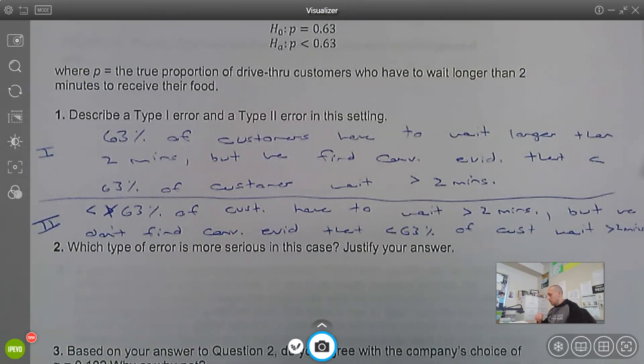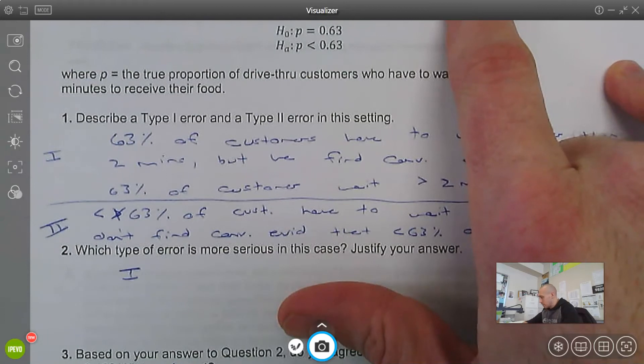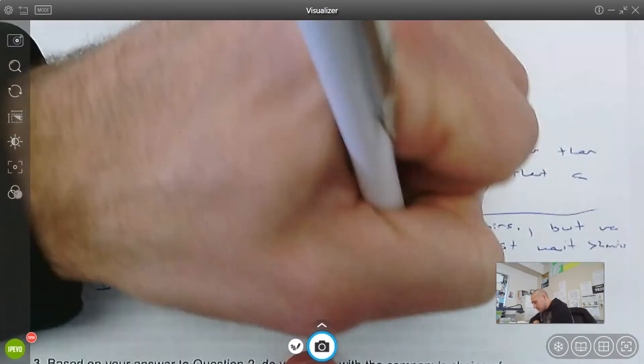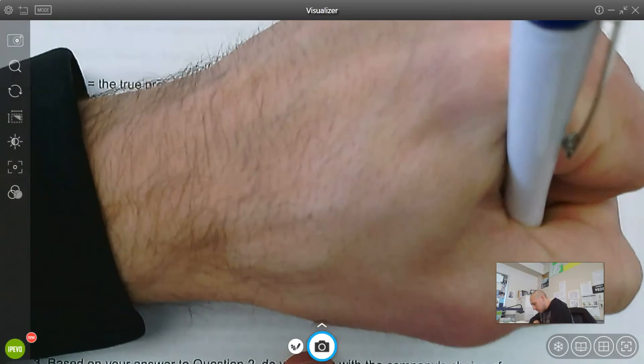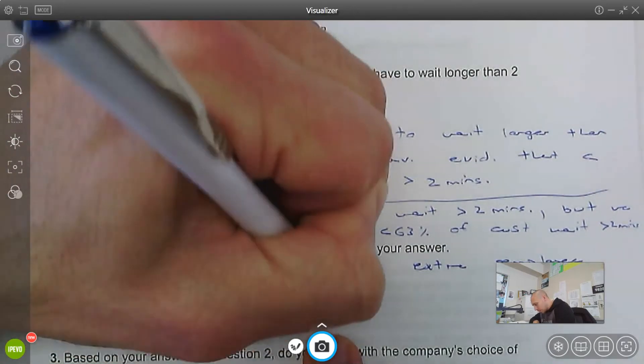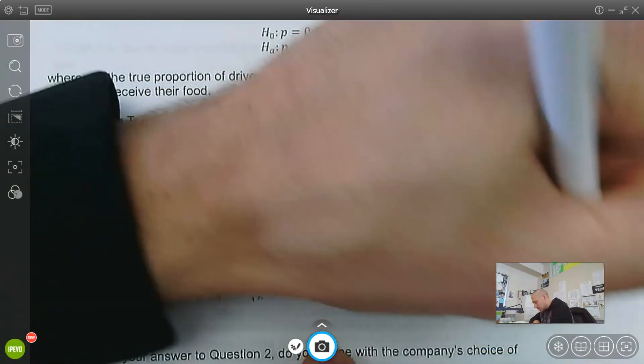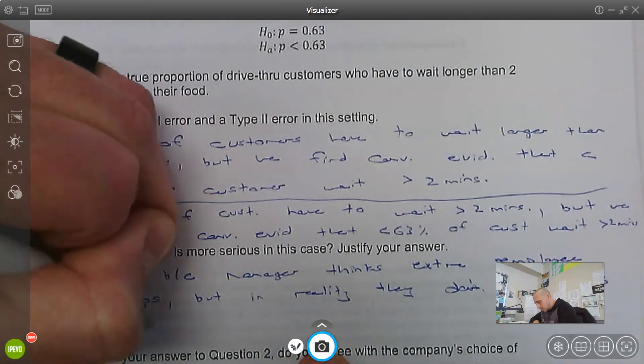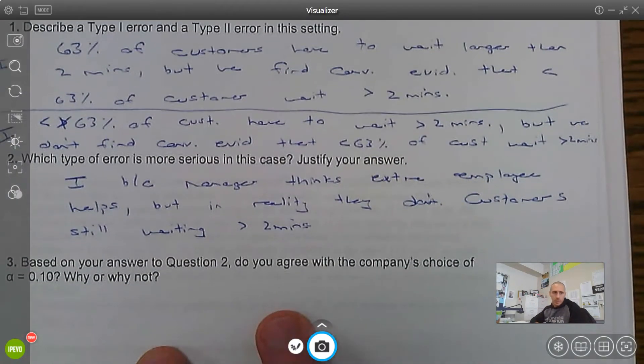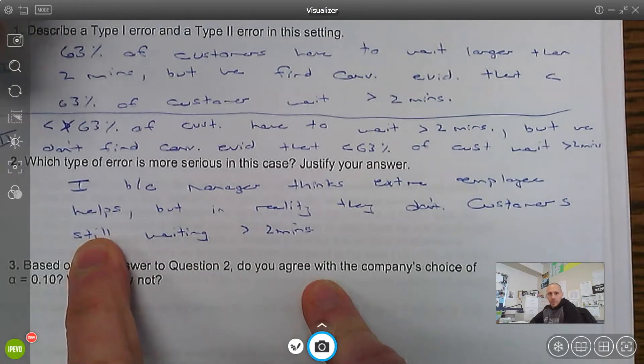Because what they're asking to do is assign an extra employee to the drive-thru, because the manager thinks the extra employee helps, but in reality they don't. So ultimately customers still waiting more than two minutes in the drive-thru, which they're trying to avoid. This is not the letter I, it's Type 1. I should have written Type 1.